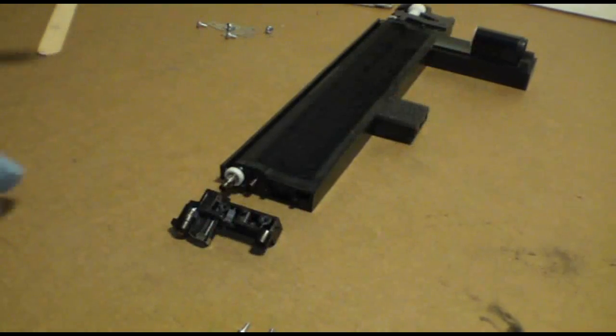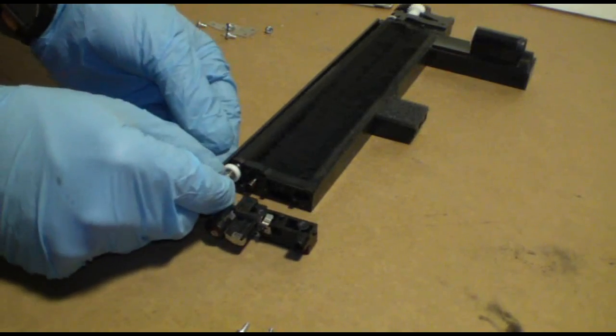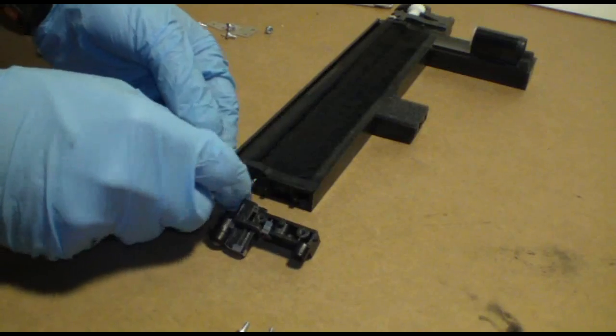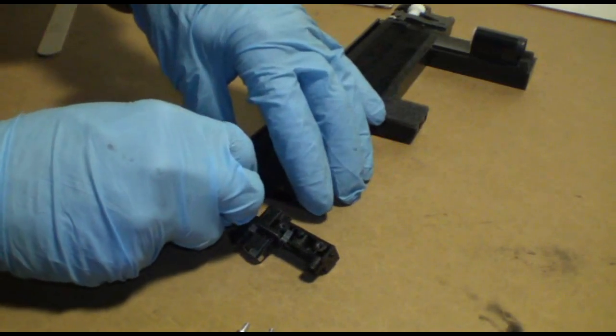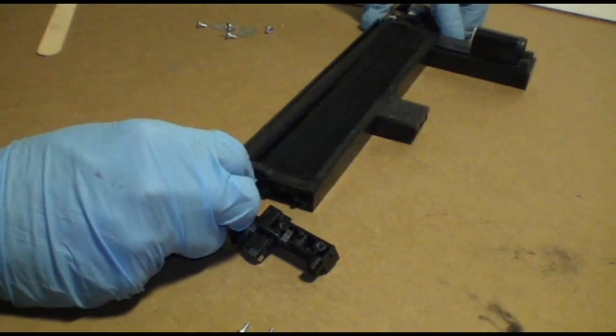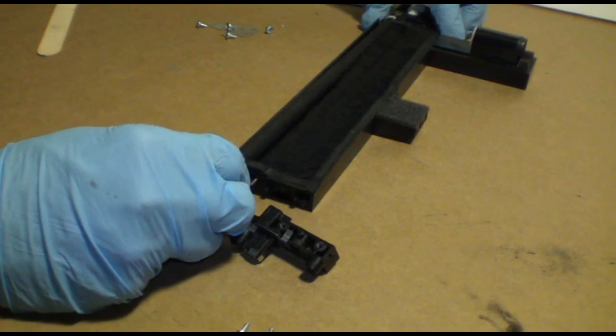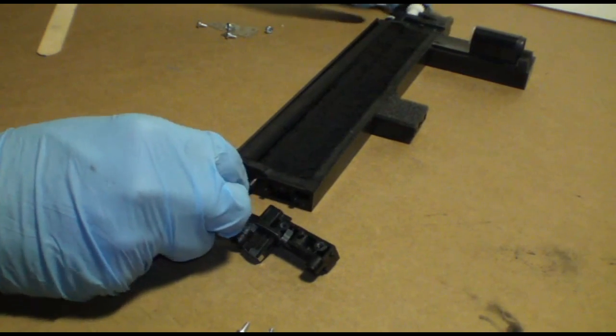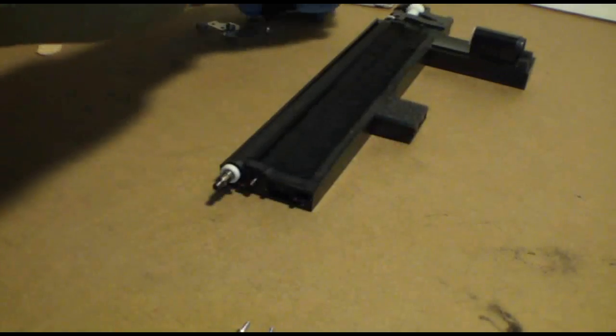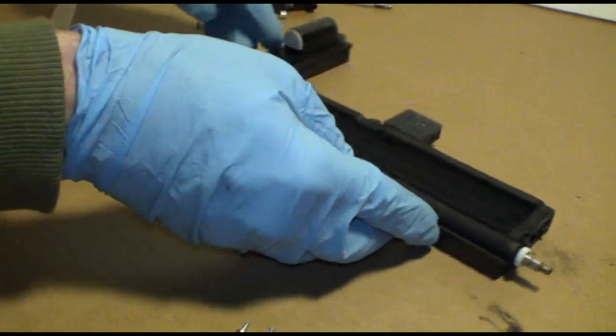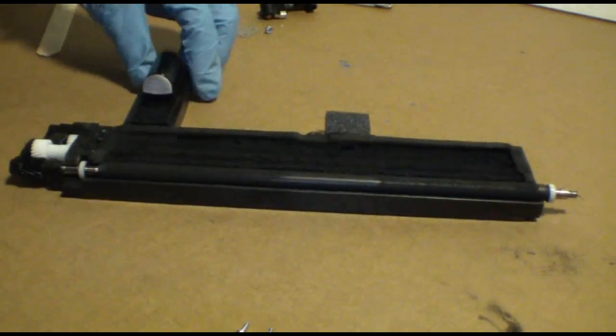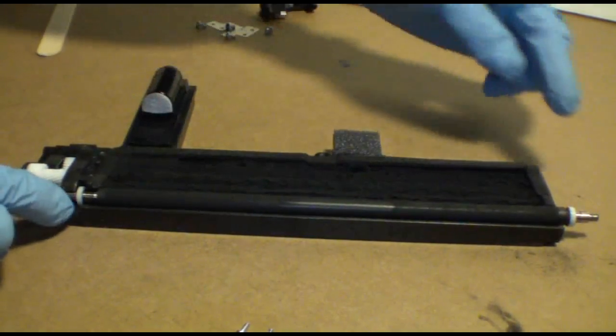Alright, so as you can see the end came off here. The end comes off very easily and it should go on just as easily but we'll be visiting that in the future. As you can see the roller starting to come out, it's really just a gentle pull. It's not actually attached to anything at this point and you can just sort of pull it straight out.